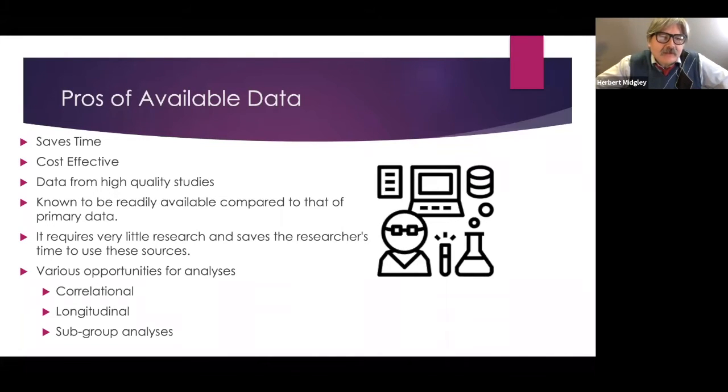The data can come from really high quality sources. You think of the census, the things from government. A lot of the big companies conduct research and you can have access to their secondary data, the available data out there. It's known to be relatively available in comparison to primary data because it's already collected. Primary data, you're going to have to collect yourself, and that could take a lot of time and potentially a lot of money as well. One thing nice about it, if you can find the available data for what you're trying to do research, you can start doing research immediately with that data. It requires very little time for the researcher and gives you opportunities for various analysis, correlational, longitudinal, subgroup analysis as well.